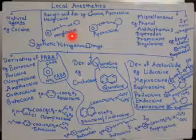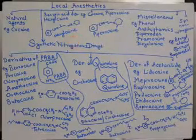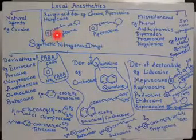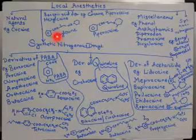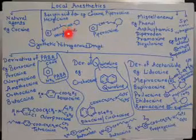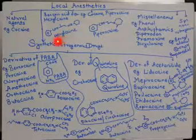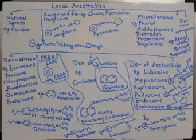To draw the hexylcaine structure: since it is a benzoic acid derivative, add an aromatic ring with COO, then a 1-2-3 carbon atom setup, then NH, and since it is hexyl, add a cyclohexyl group here.